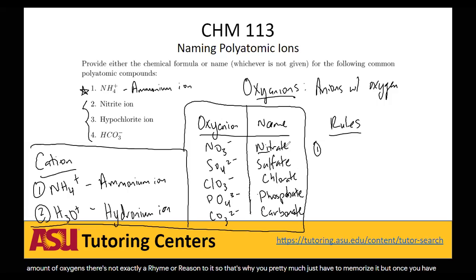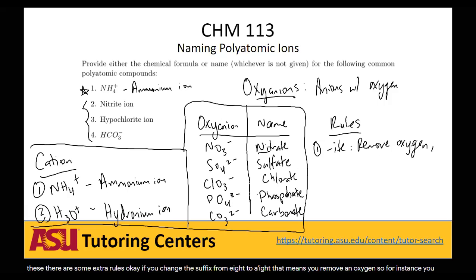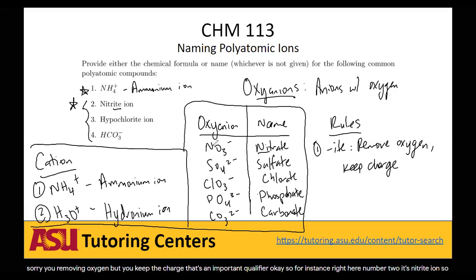Rule one: if you change the suffix from '-ate' to '-ite,' that means you remove an oxygen — but you keep the charge. That's an important qualifier. So for instance, number two here is the nitrite ion. We look at nitrate, NO3-, and we just remove an oxygen, giving us NO2-. So you simply remove or add oxygens depending on the rule, while keeping the charge the same.